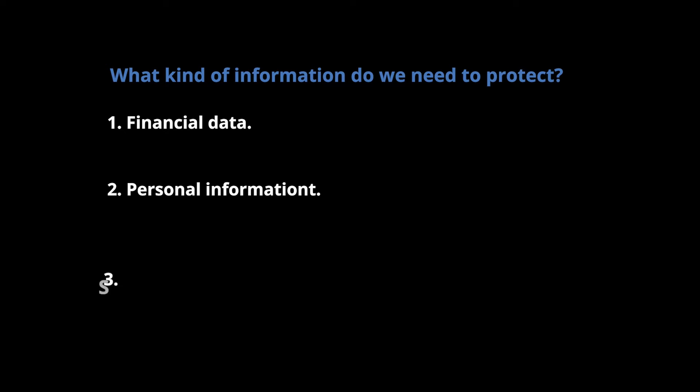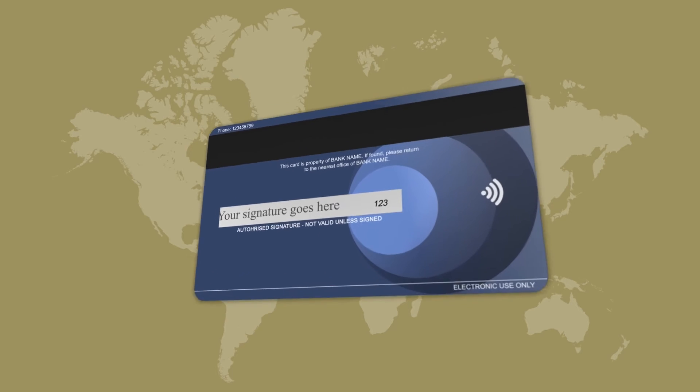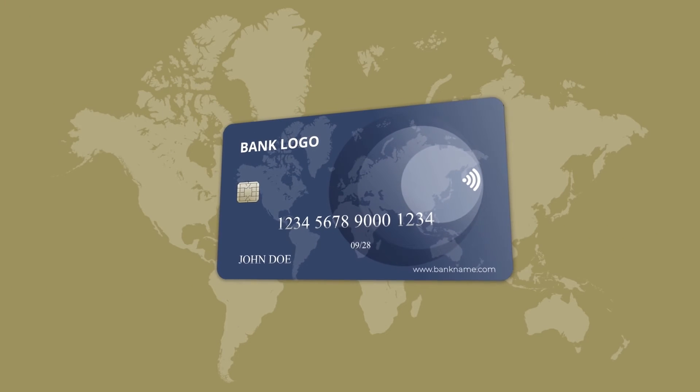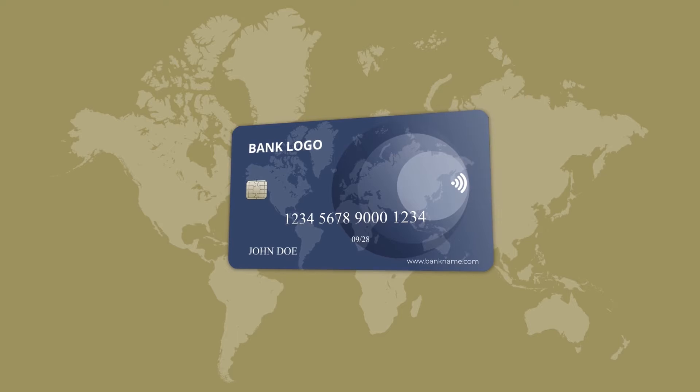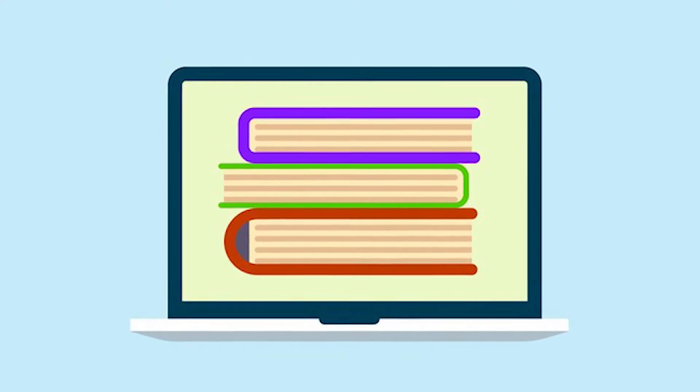We also have student records — that is performance grades, health information, as well as parent information. Another type of information that we need to protect is credit card information. This is because when an attacker has your credit card data, they're able to pay online using your card and can also impersonate you. Lastly, we also need to protect intellectual property. This is data or other content that you've created on your own and you would not want used without your explicit permission — for example, books or training content that you've created for your students.